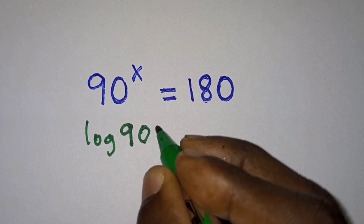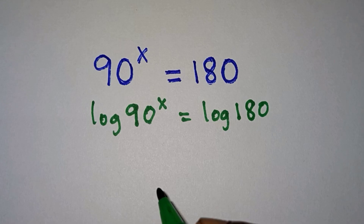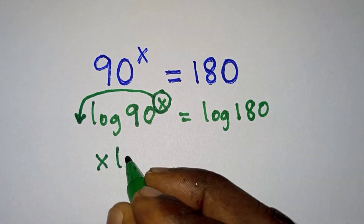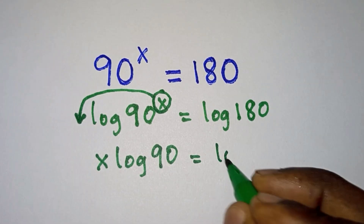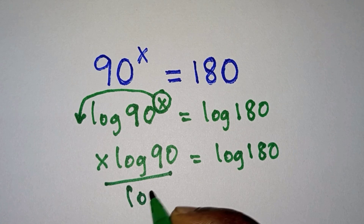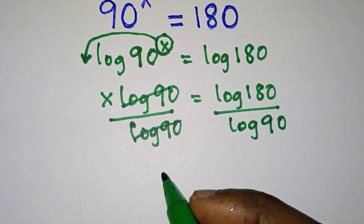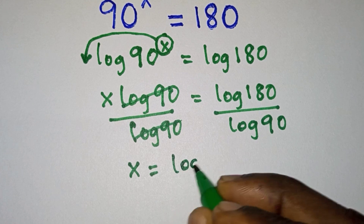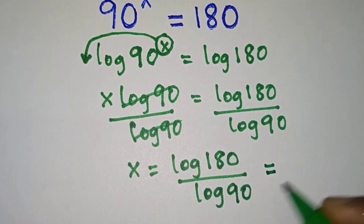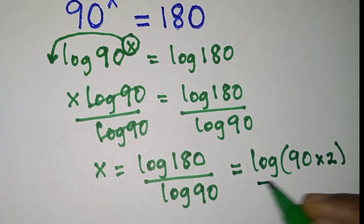So we're going to have log 90 to the power x is equal to log of 180. In dealing with logarithm, the power now becomes the leading number, so we're going to have x log 90 is equal to log 180. We are looking for x, so let's divide each side of the equation by log 90, so we have x is equal to log 180 divided by log 90.